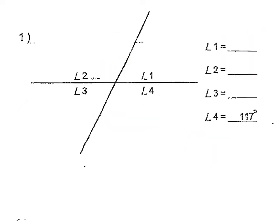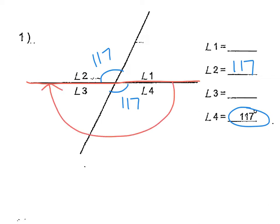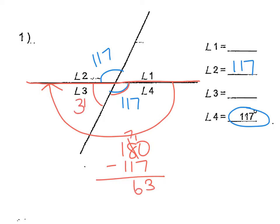Let's get some more examples. In this diagram, angle 4 is 117 degrees. Angle 4 and angle 2 are vertical angles, and vertical angles are congruent, so angle 2 must also be 117 degrees. Next, to figure out angle 3 and angle 1 — this whole straight line makes 180 degrees. So if this portion is 117, we do 180 minus 117, and that gives us 63 degrees for angle 3.